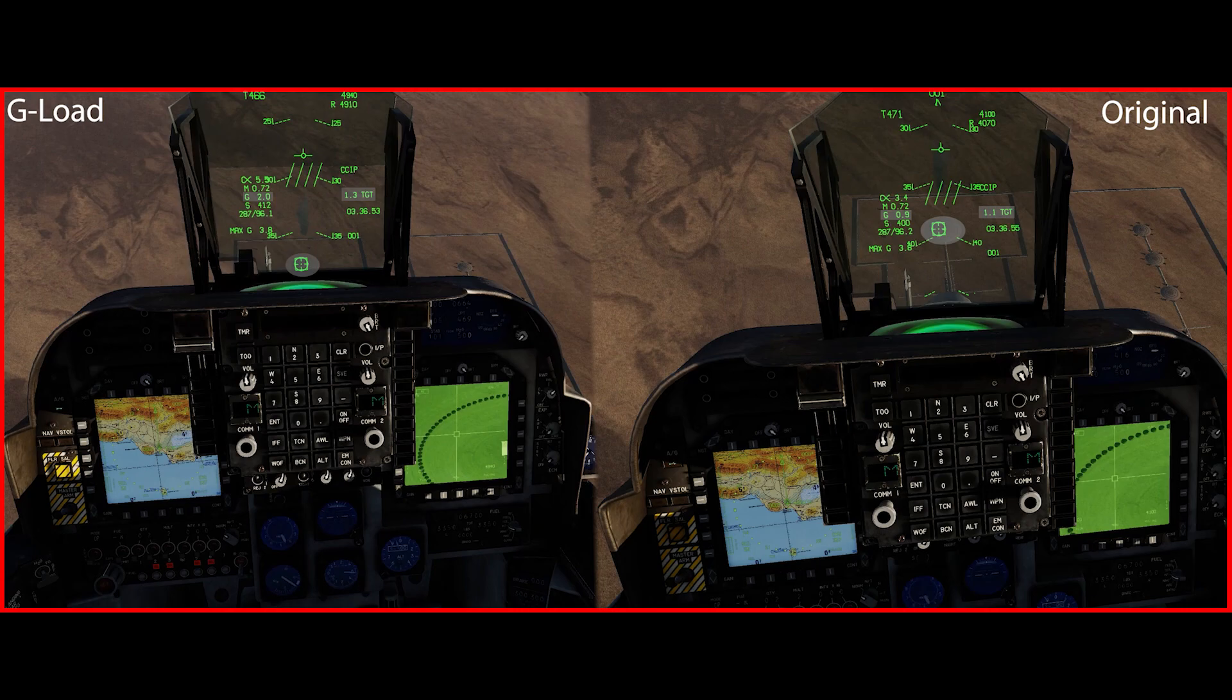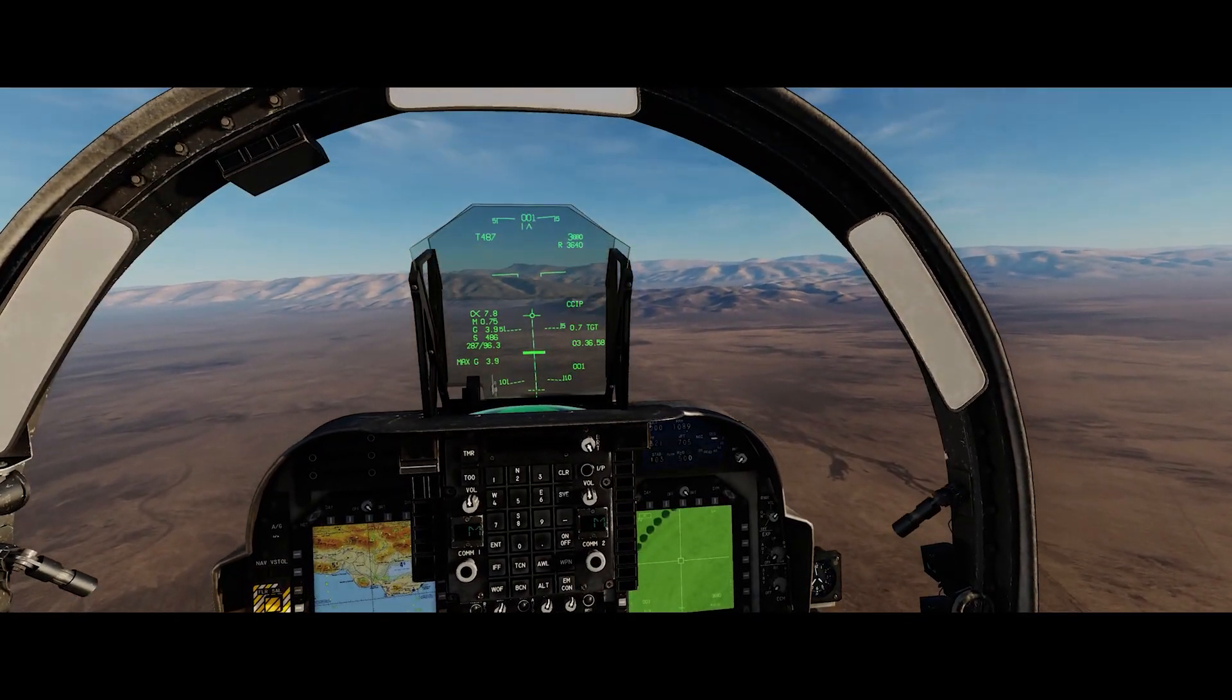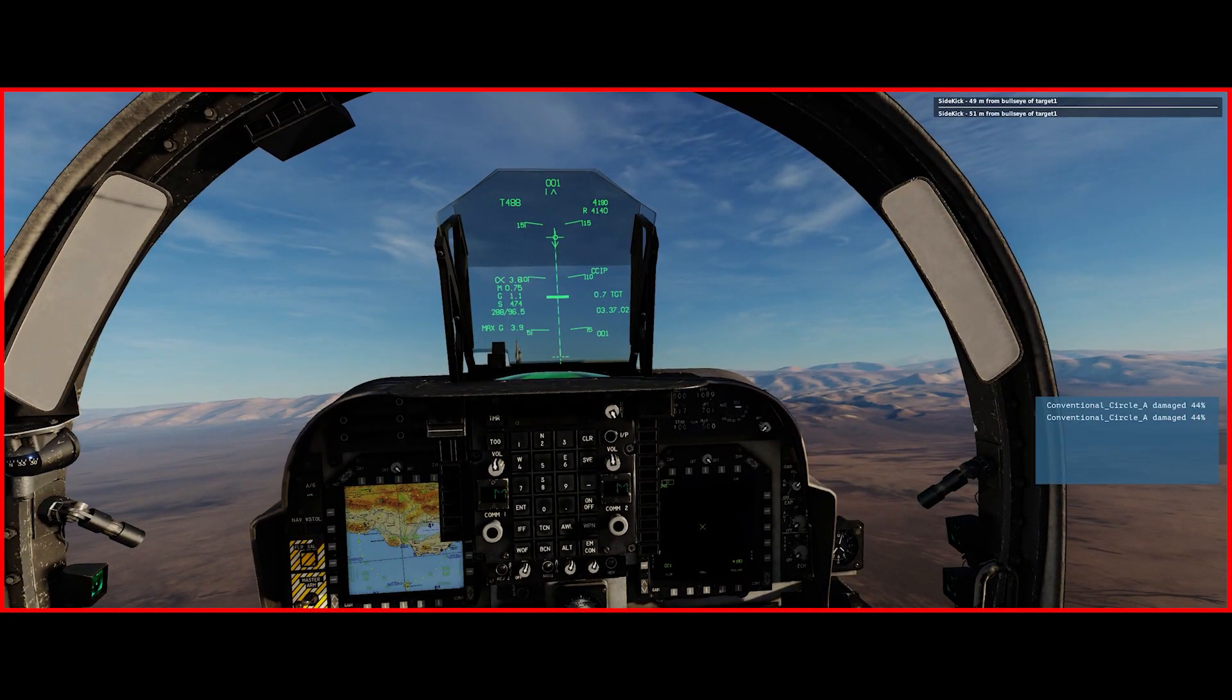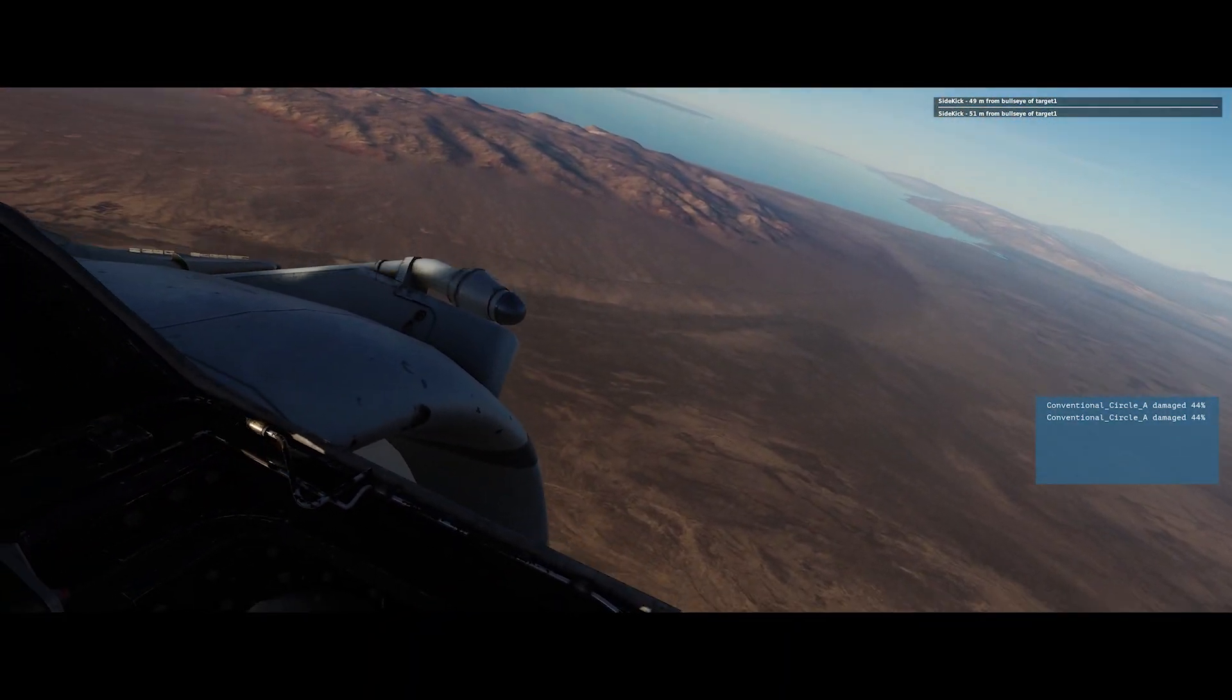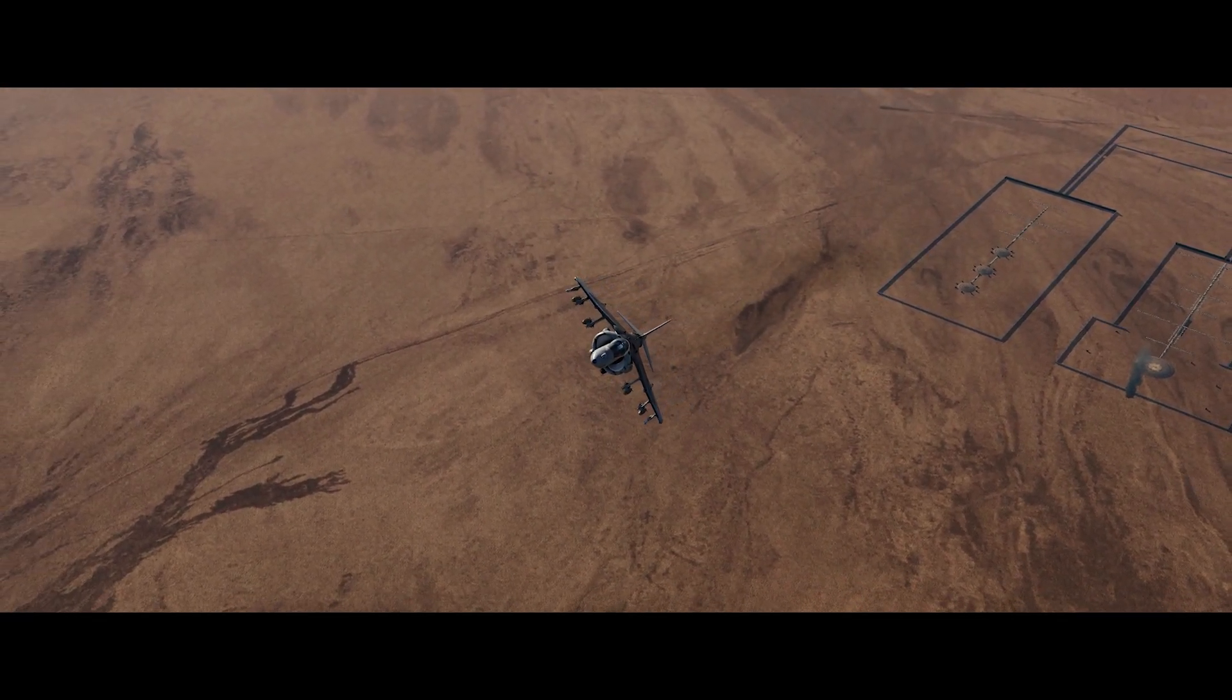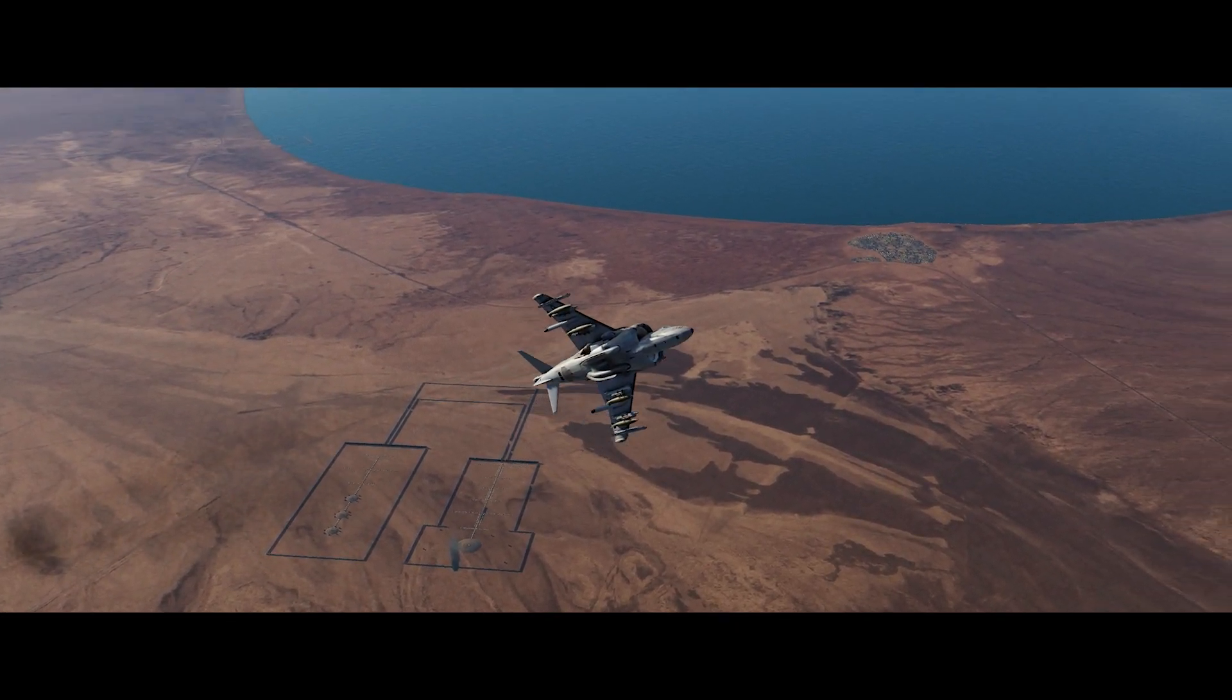And let's take a look at the difference we got. You can see on the left we got the G-load. And on the right we have the original. And you can see the difference in the Gs, the target range, and also the sight picture. And let's see what we got for our result. Now, it's not that it's impossible to get a good result when you're pulling on the stick. But the thing is that the PIPR is moving so much faster that it's a lot harder to time your release. And that's effectively what we saw there.